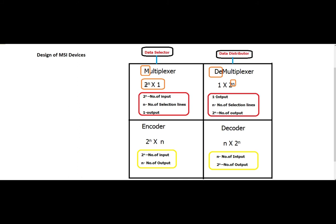If you substitute n equal to 1, we will have a 2-by-1 multiplexer. If you substitute n equal to 2, we get a 4-by-1 multiplexer. And if you substitute n equal to 3, you will get an 8-by-1 multiplexer.